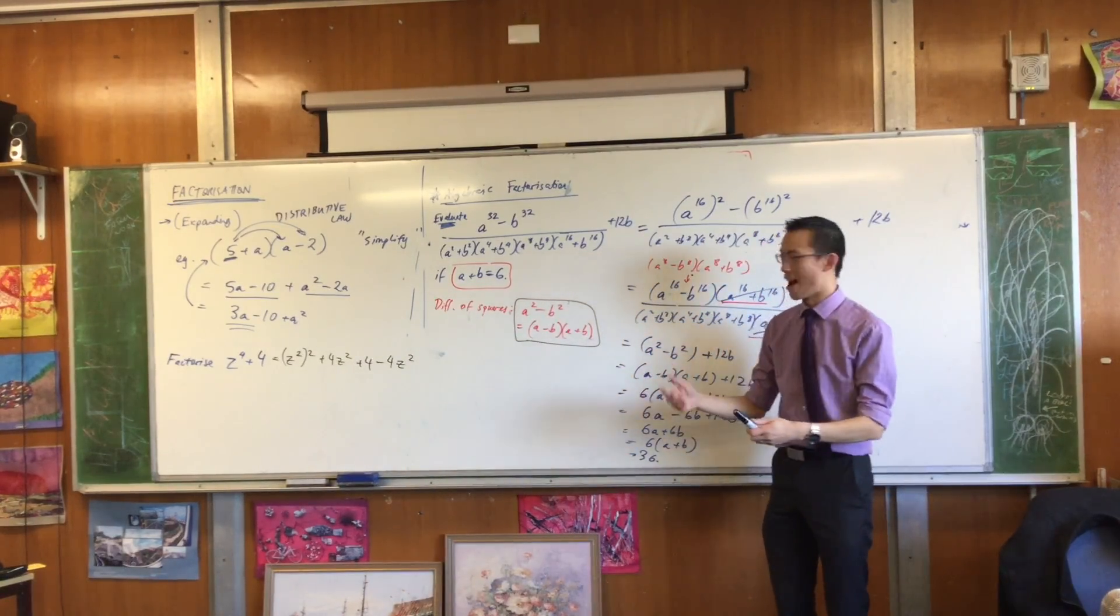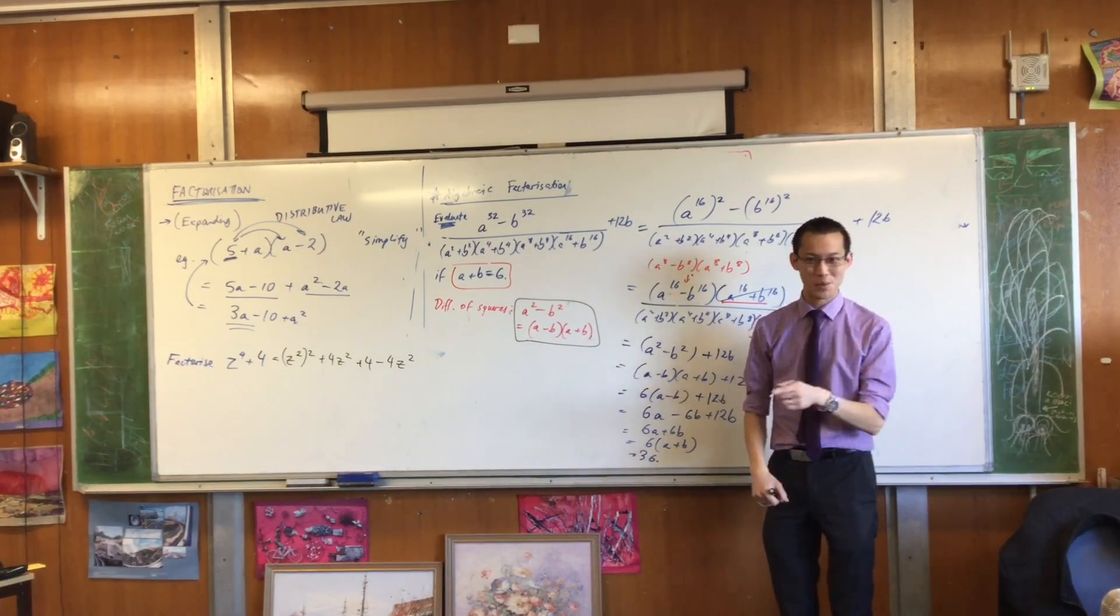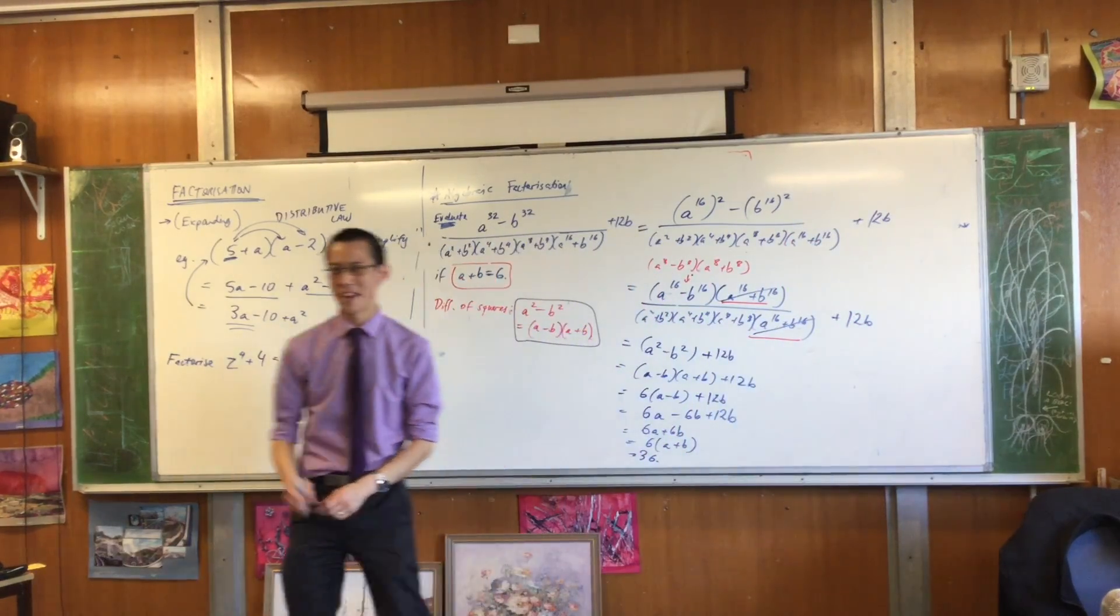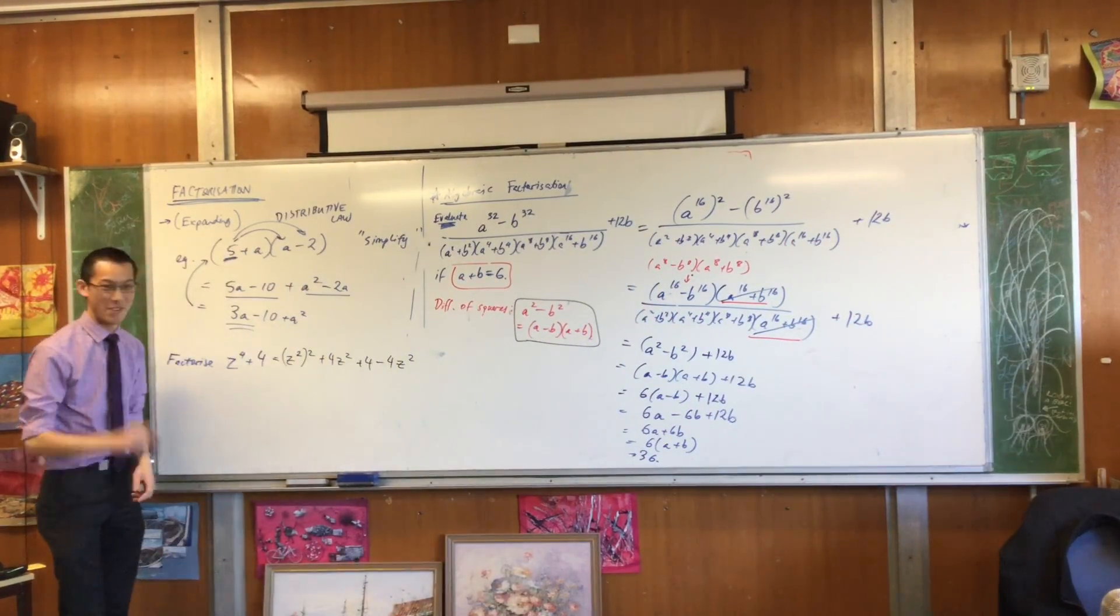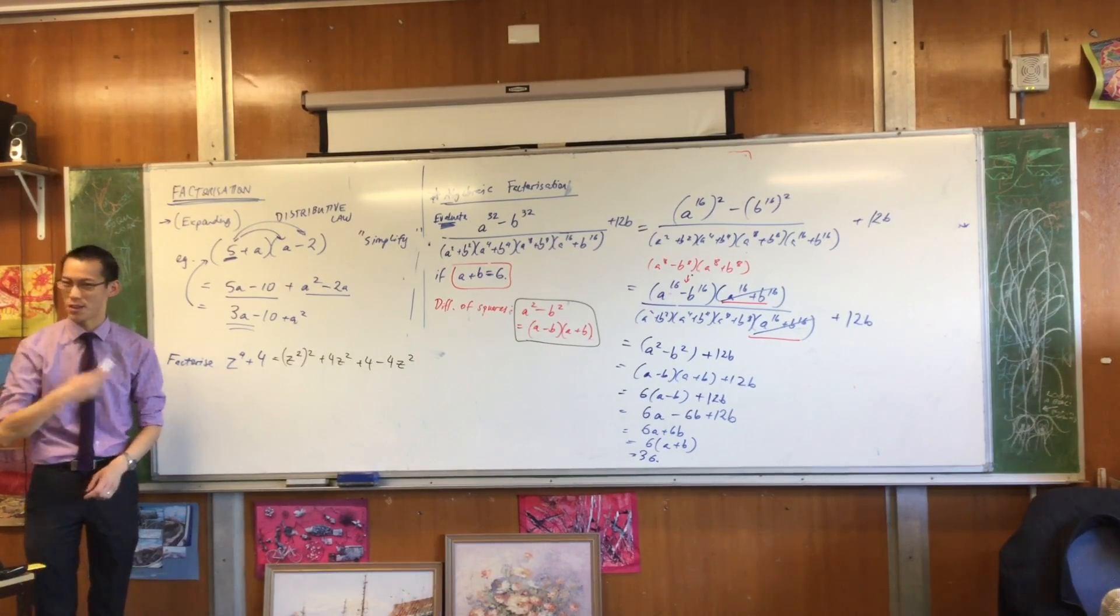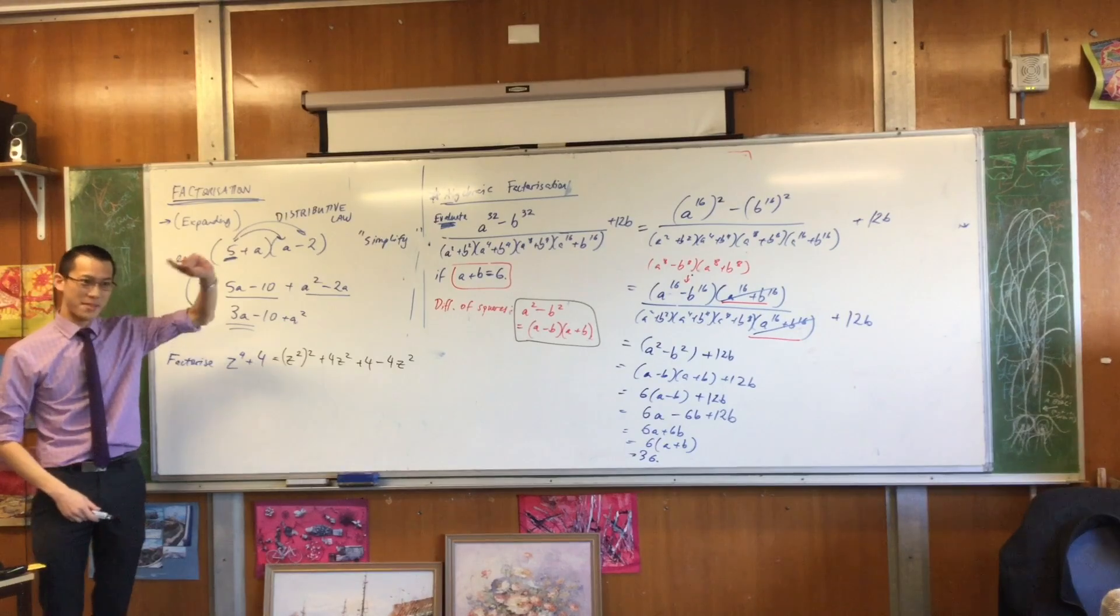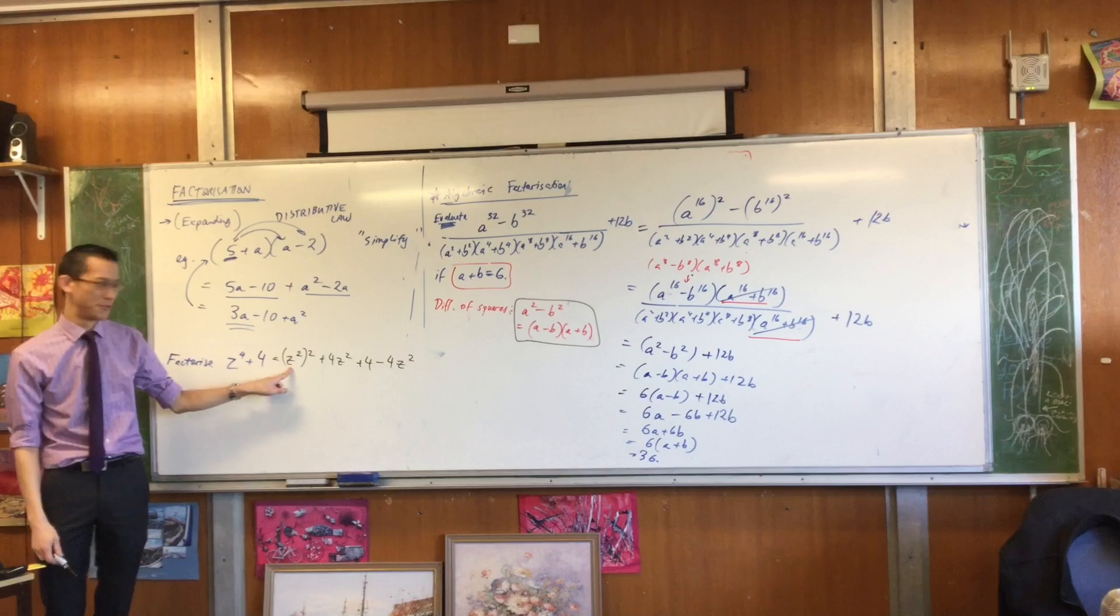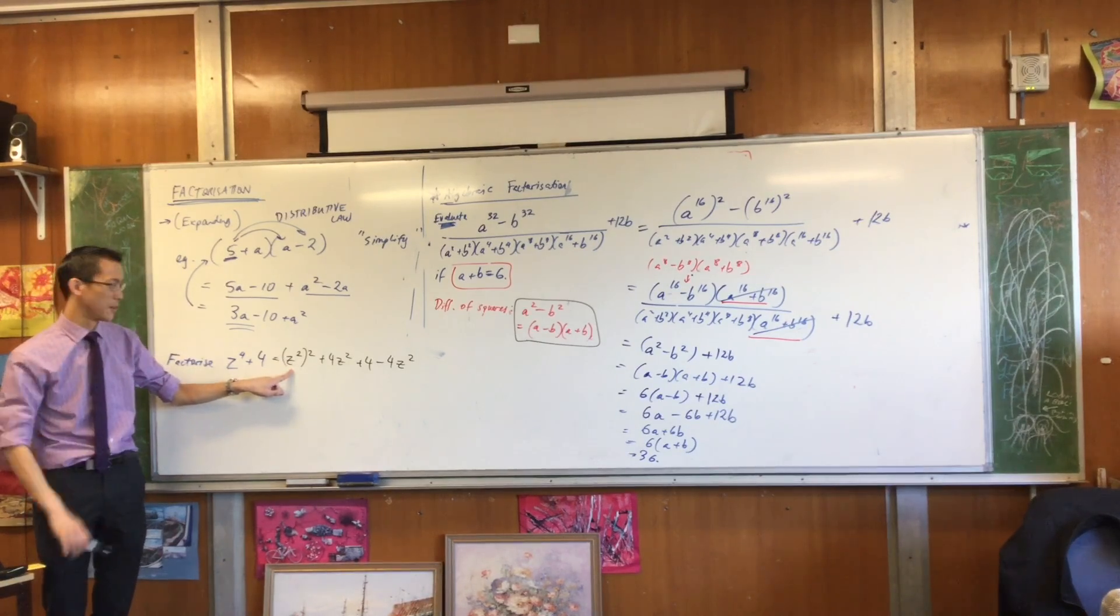Number one, I write my z's with dashes through them. The reason why, as you might be able to look at the board, my z's and my 2's look really similar and yours all do too, especially when you're in a hurry and you're writing things. There's a good chance that a large proportion of the people in this room will one day do mathematics extension 2, which surprisingly has a lot of z's in it when you do this topic called complex numbers. So that's why I do this. It's just a habit.